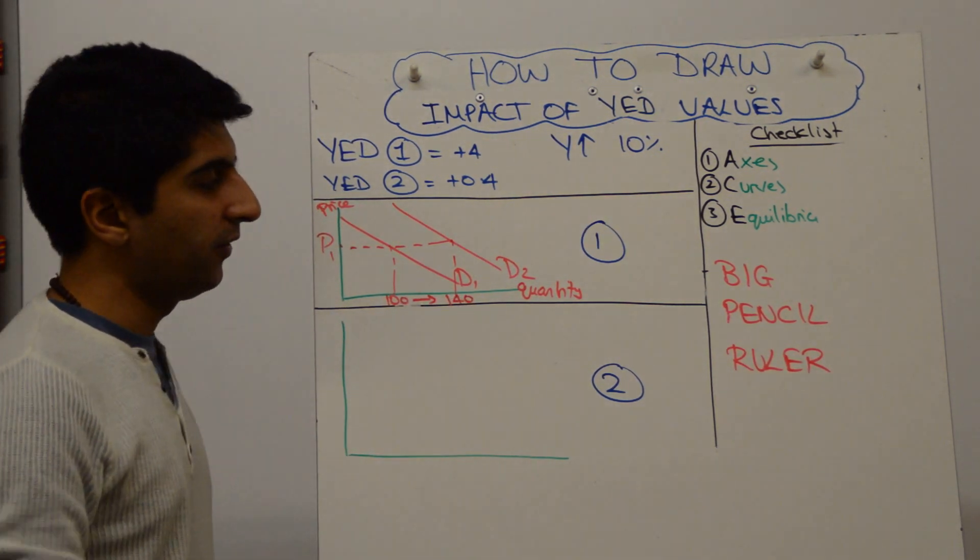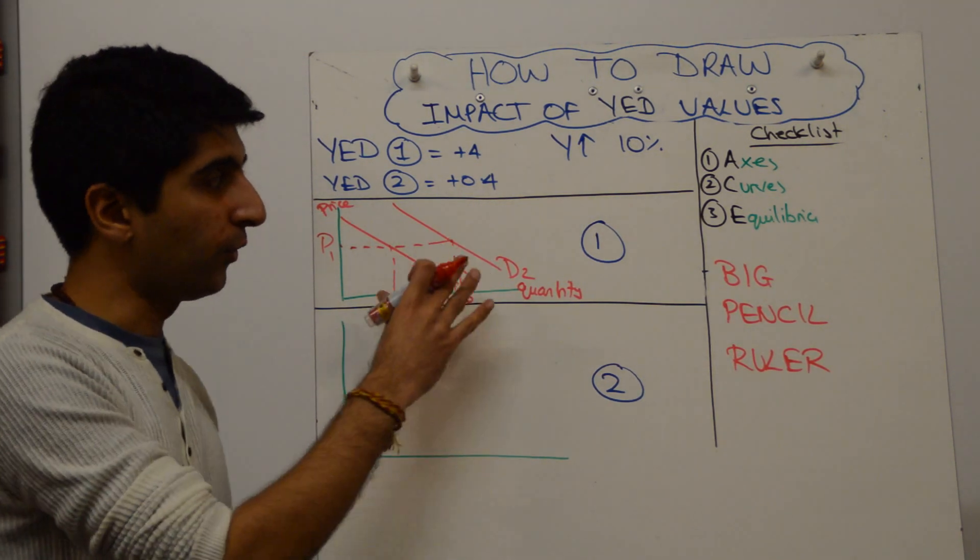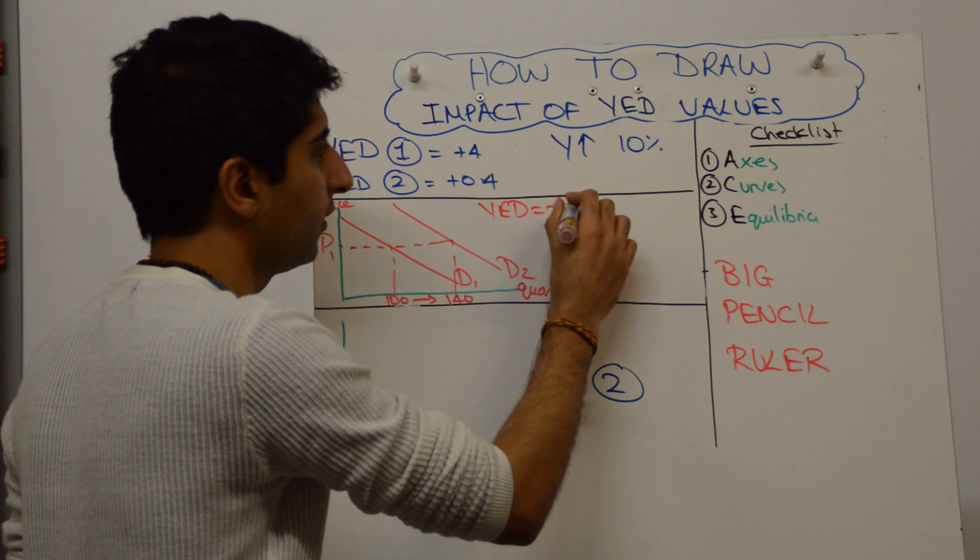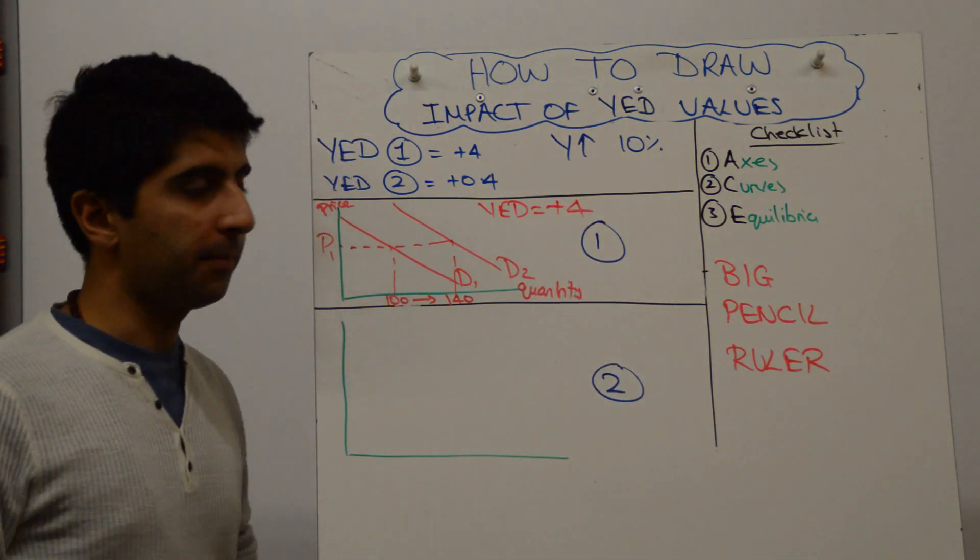Alright, so that's a nice thing to do, and that's how you draw the impact of a YED value of plus 4. Alright, so that makes that more clear.